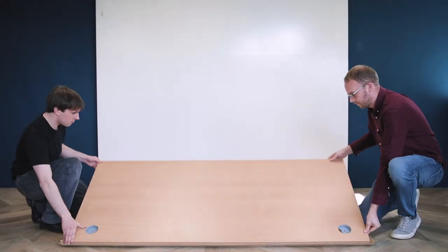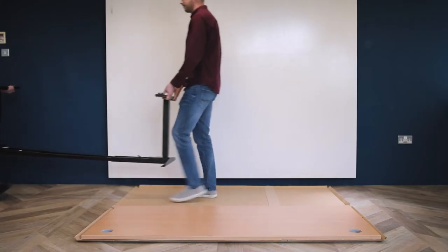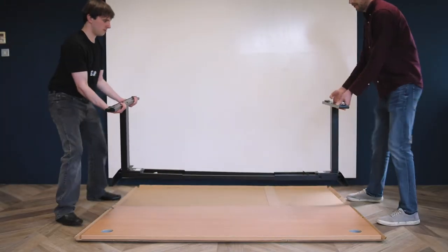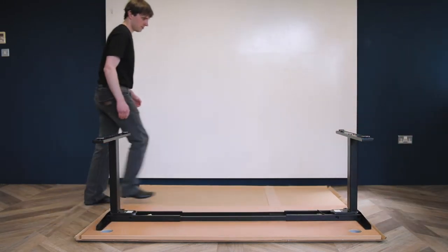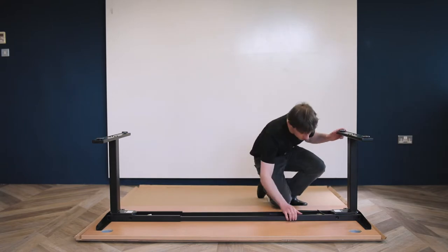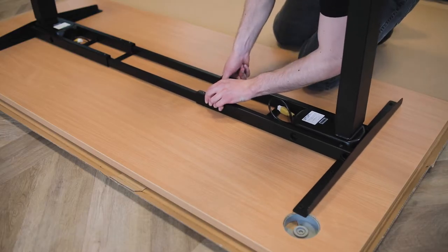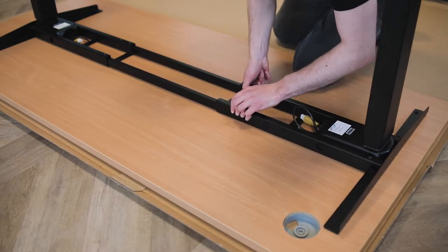Next, place the desktop on the ground with the underneath of the desk facing up. Then align the side brackets of the frame to the underside of the desk as required and fit with the screws provided.